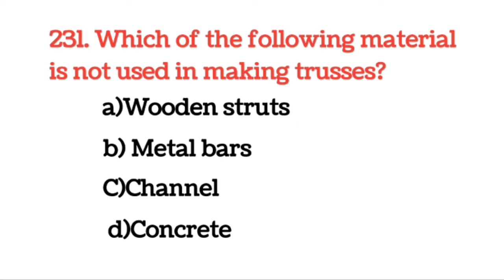Next question: Which of the following material is not used in making a truss? Answer: Concrete. Concrete का use truss बनाने में नहीं किया जाता है, जबकि wooden, strut, metal bars और channel का use truss बनाने में किया जाता है।